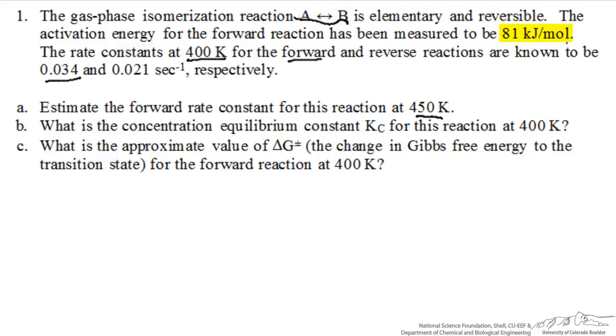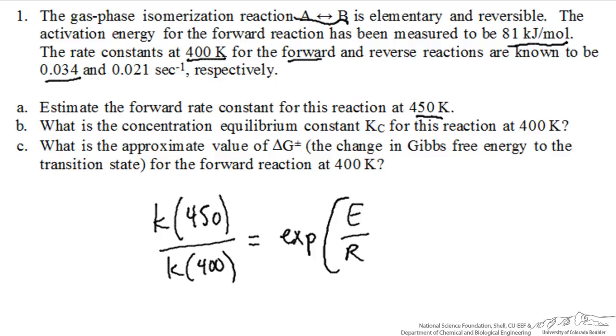The activation energy for the forward reaction is given, and so we just use an Arrhenius relationship to get the rate constant at a higher temperature. We can do this in terms of K at 450 Kelvin compared to K at 400 Kelvin. According to the Arrhenius relationship, this is equal to the exponential of the activation energy divided by the gas constant times 1 over the starting temperature minus the temperature that we want the new rate constant at, which is 450 Kelvin.